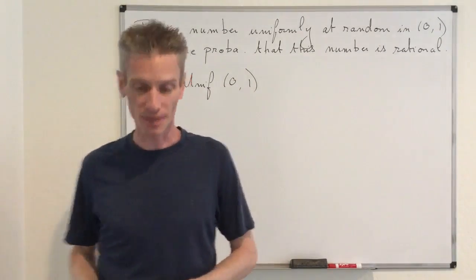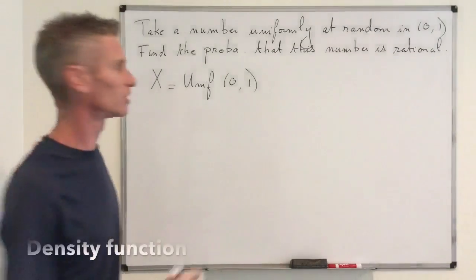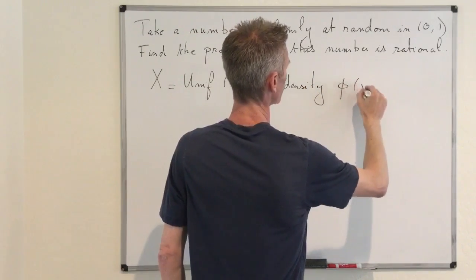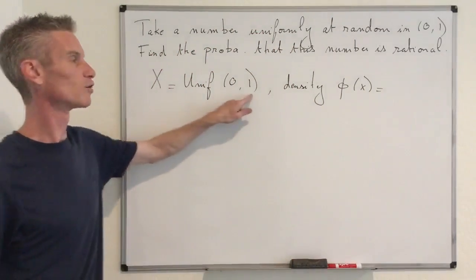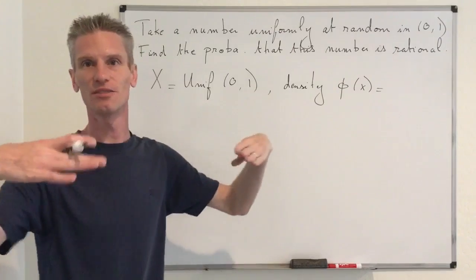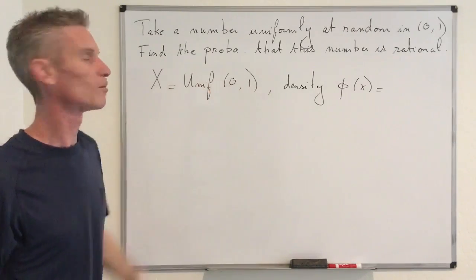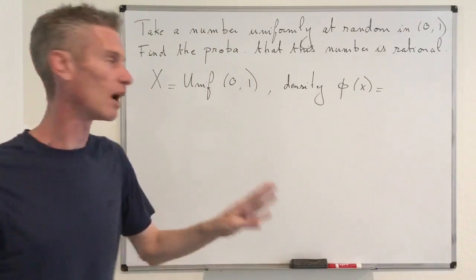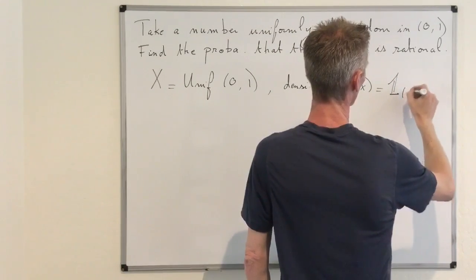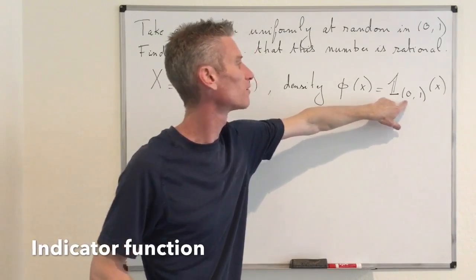Continuous random variables are characterized by their densities. In the case of the uniform random variable, the density function f(x) equals 1 on the interval [0,1] and 0 outside. In general, if you have the uniform on the interval [a,b], you want this function to be constant on [a,b] with total integral equal to 1, so that would be 1/(b−a). Here it is just 1 on [0,1], which we can write as the indicator function of [0,1] evaluated at x.